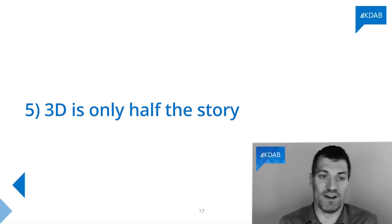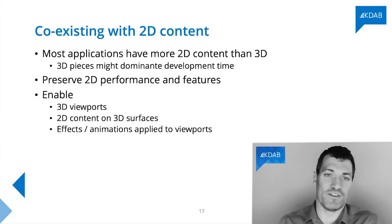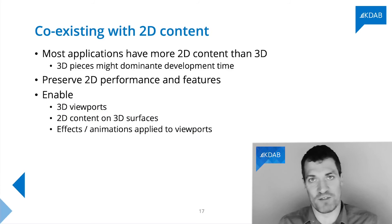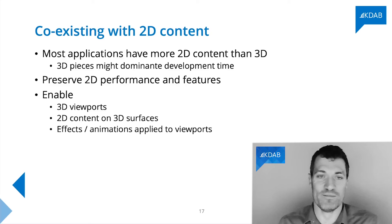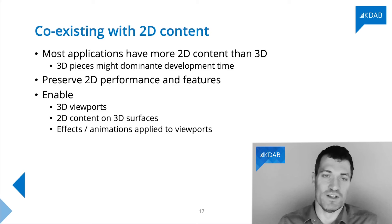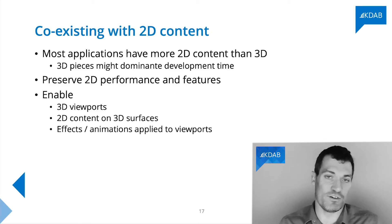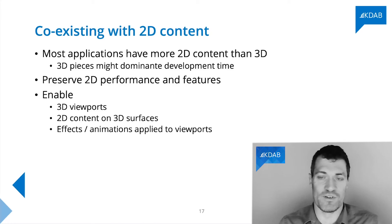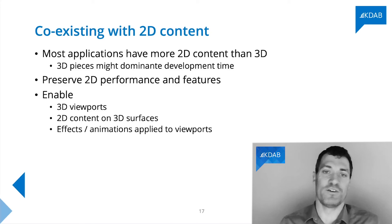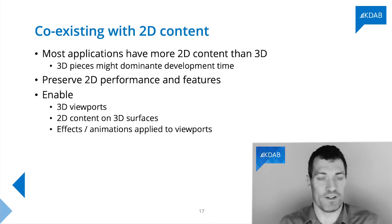3D is only half the story — maybe less, maybe more. If your application is entirely 3D, you're probably making a game, which would go back to Unity or Unreal. But if you have an existing application you're adding 3D content to, or one which has some 3D content and 2D screens, you need good coexistence between your 2D and 3D content. We don't want to compromise the excellent features of Qt Quick because we add 3D, either in terms of what we can do or in terms of performance and energy efficiency. Users don't want their whole application to be 10 times bigger because in one screen there's some 3D content they never use.